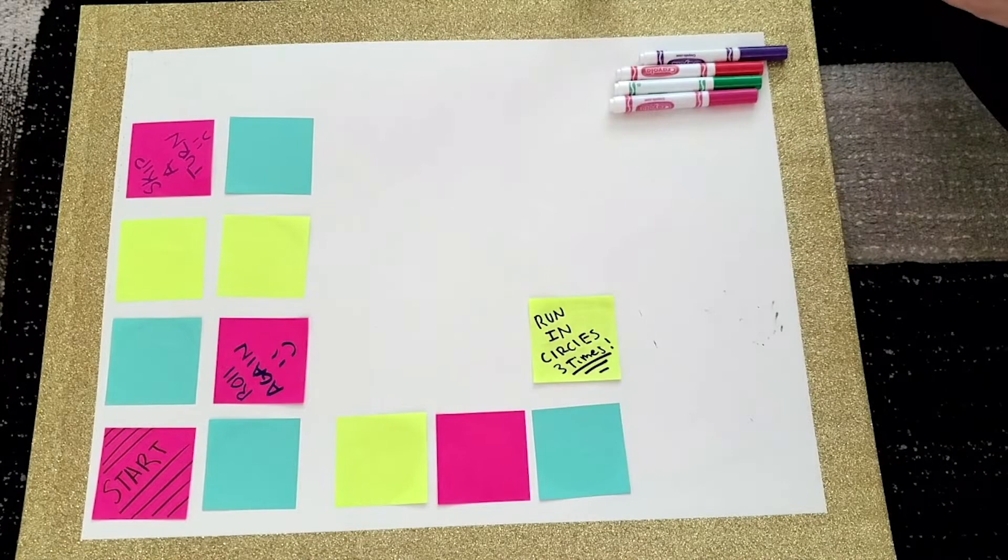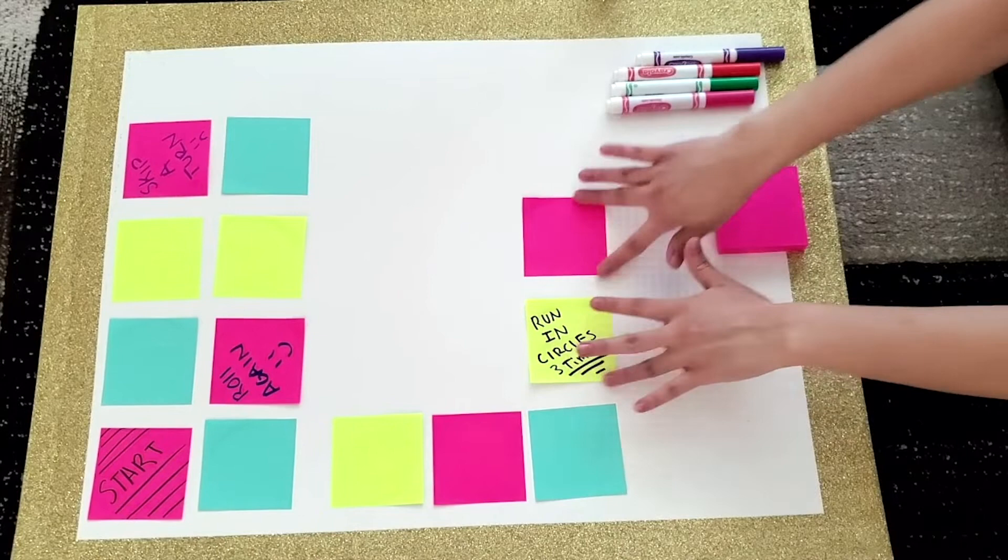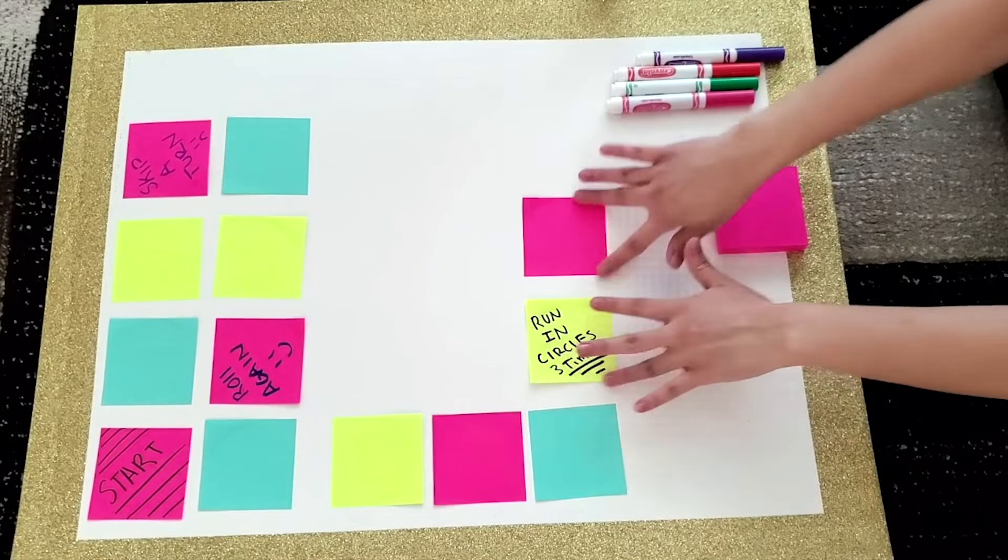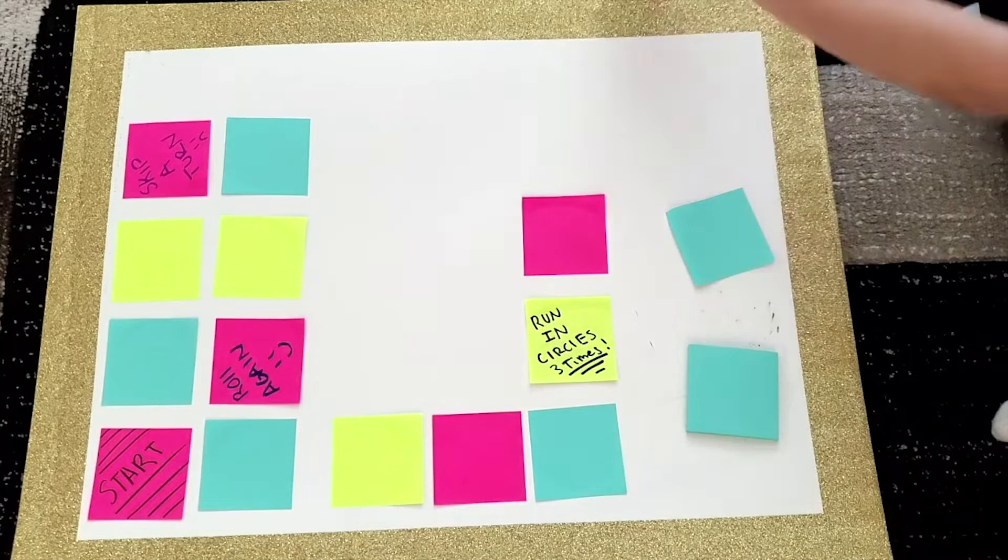So right after we paste the pink post-it notes, what I was thinking was that we can just create one more row of colorful post-it notes. And then after that row, we can kind of do something a little bit different. So that way there's not just rows and rows after of just colorful post-it notes. I was thinking of doing something a little bit different as you will see more into the activity.